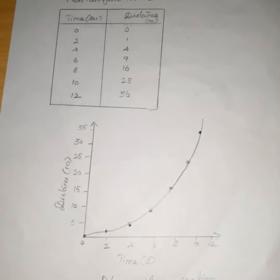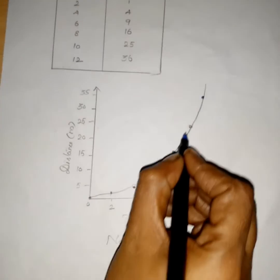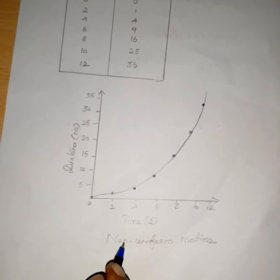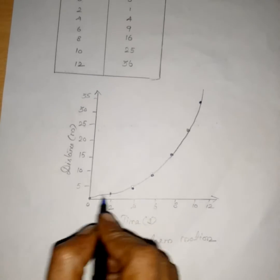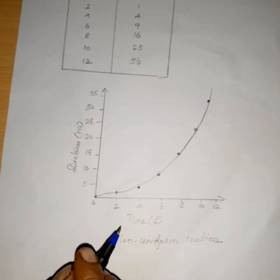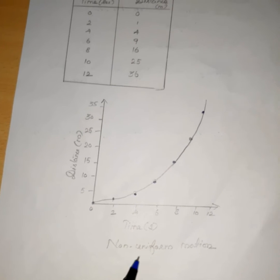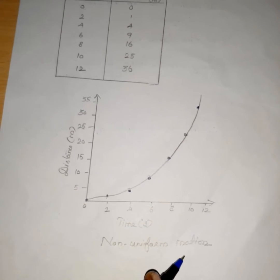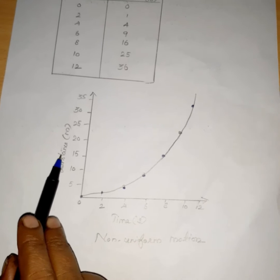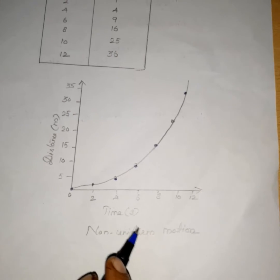What do you understand? The graph is not a straight line — it is a curve. So it is non-uniform motion. Non-uniform motion means it travels unequal distance in equal interval of time.